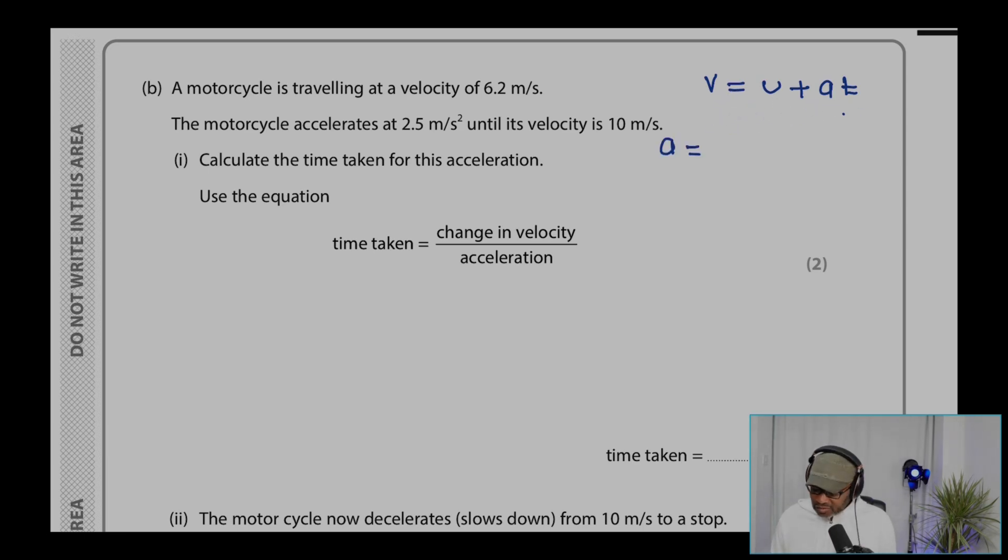If I make A the subject, I'll get A equals V minus U over T. But I want T to be the subject, so I could write that as V minus U over A. And that's where that came from.